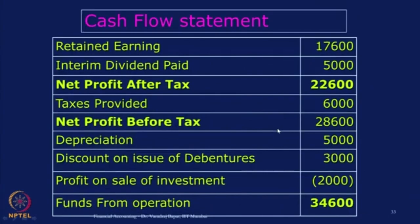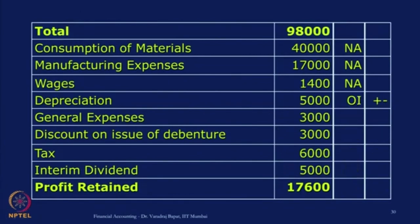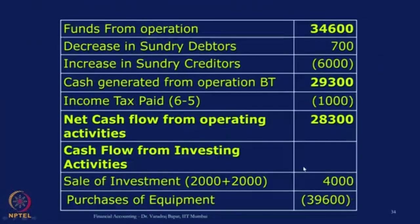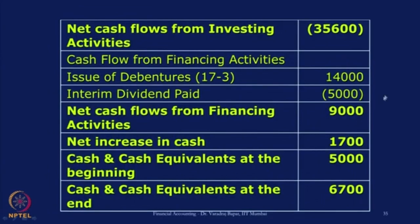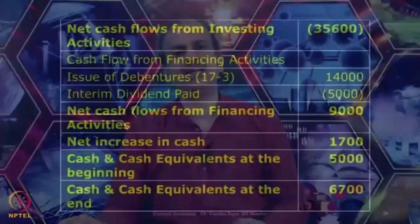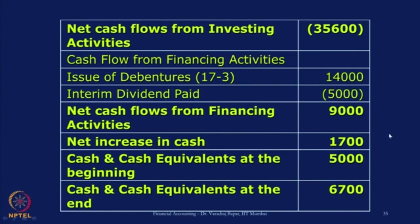The other P&L item in financing is interim dividend, marked F/O minus plus. Dividend is always a financing activity — the company has issued shares and is giving dividend to shareholders; since it is given during the same year, it is called interim, meaning it is declared and paid. The amount is 5,000. That 5,000 was added in operating and will be reduced in financing. So in financing there are only two items: issue of debentures plus 14,000 and interim dividend paid minus 5,000; net cash flow from financing activity is plus 9,000.